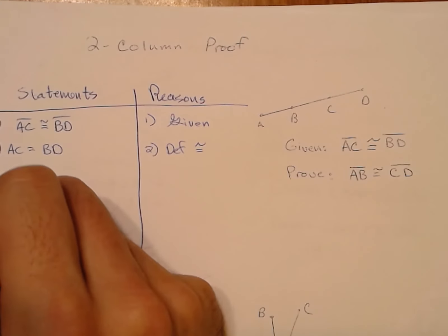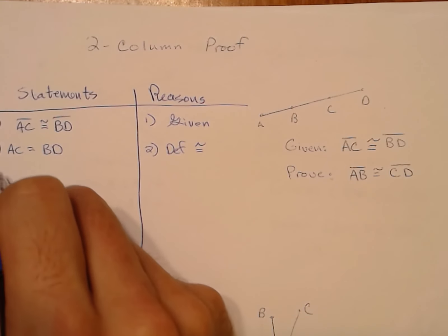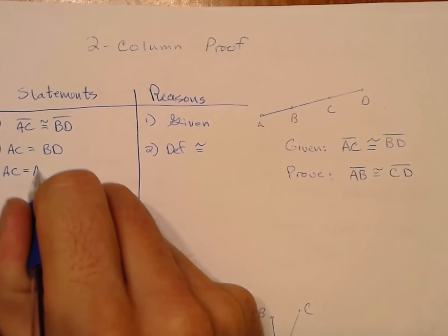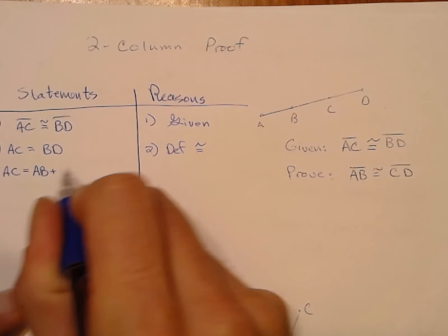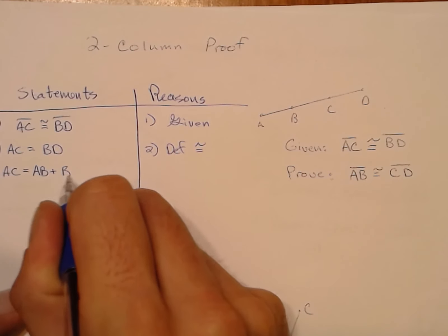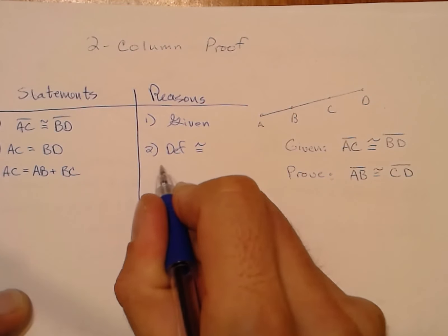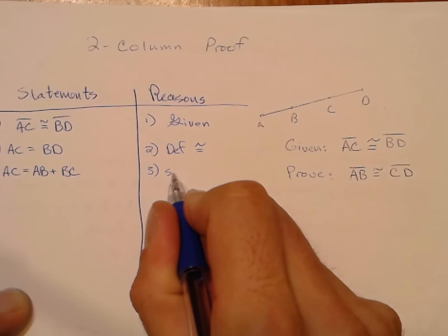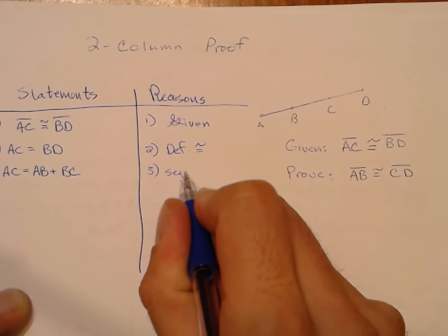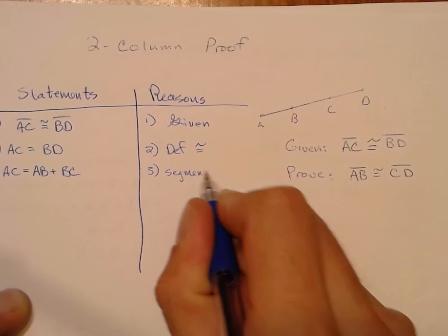Now I know that AC is really the length of segment AB plus the length of segment BC, and that is, of course, the segment addition postulate.